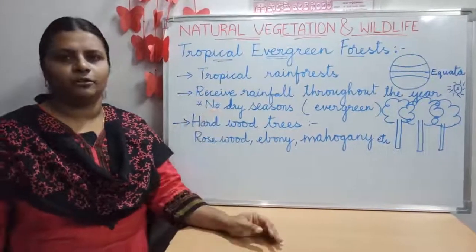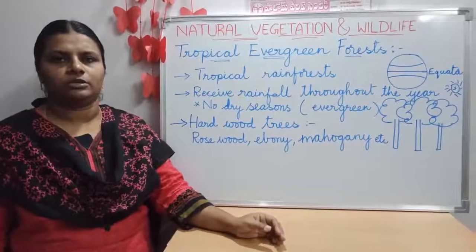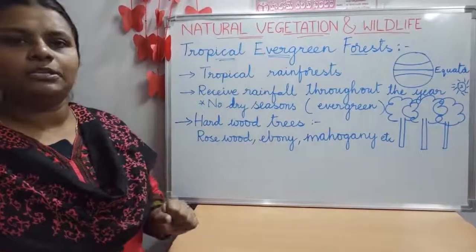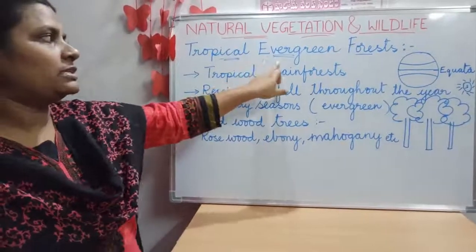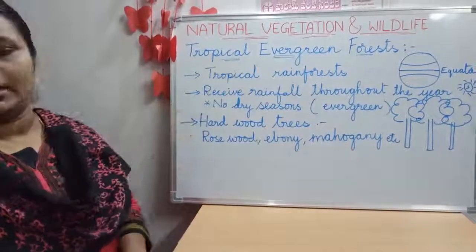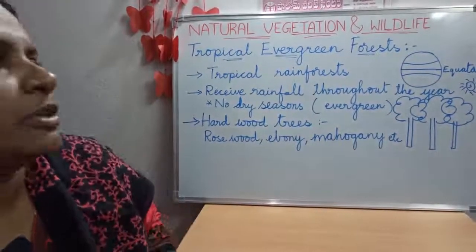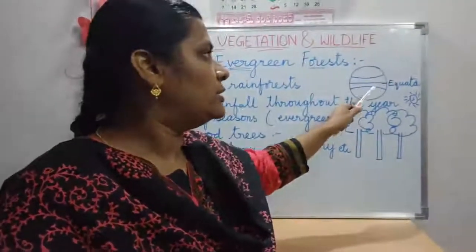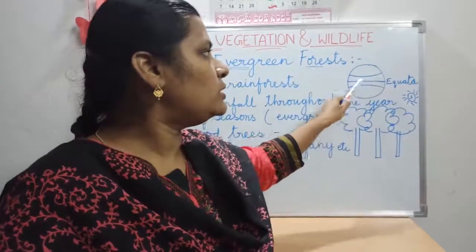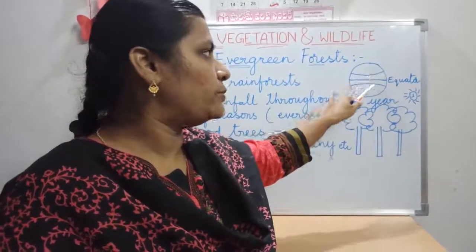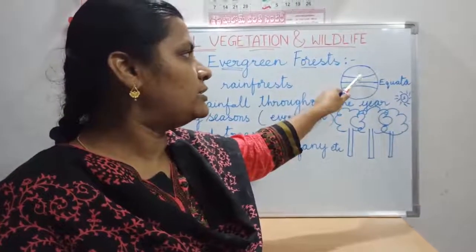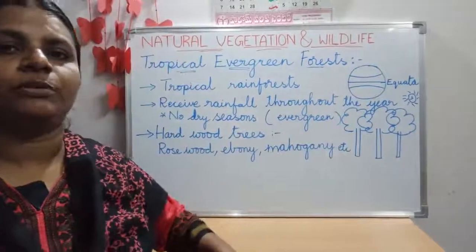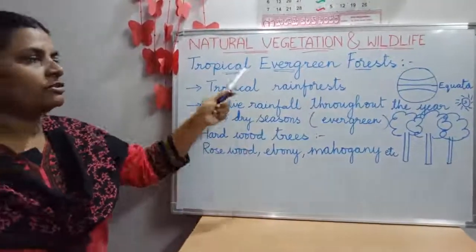Where can you find this kind of forest? They are called tropical evergreen forests. These forests are found in the tropical areas — the region near the equator. There are two tropics: Tropic of Cancer and Tropic of Capricorn. So the areas which are near to these two tropics is where you can find this kind of forest.